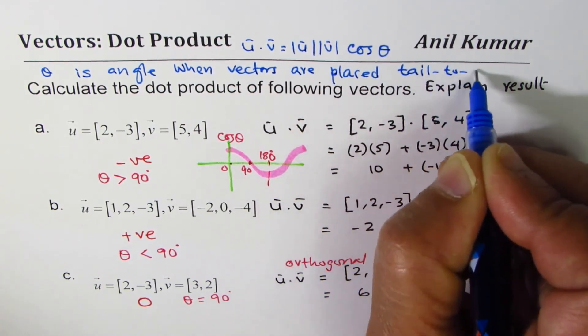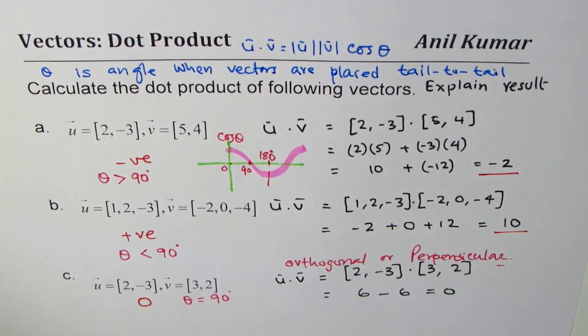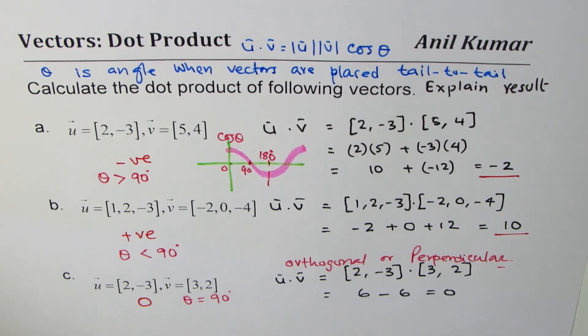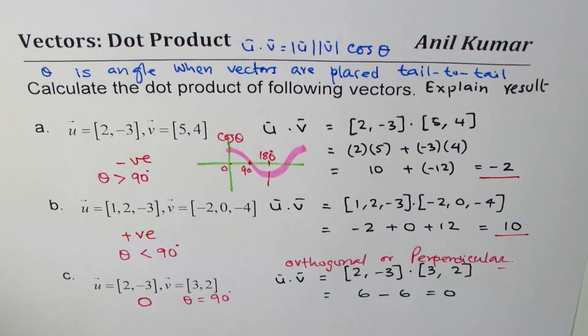This is important to understand: tail to tail. Theta could be between 0 to 180 degrees. If it is greater than 90 degrees, then the result will be negative as in part a. If the angle is an acute angle, then the result is positive. And if these vectors are at right angles, then the dot product will always be zero.